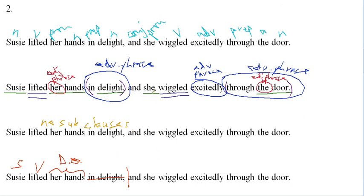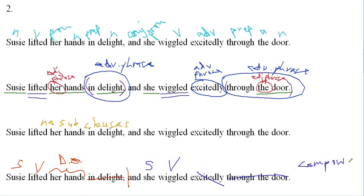Looking at the noun phrase, we have 'she,' so 'she' is a subject. 'Wiggled' — she wiggled, that's a complete thought. 'Excitedly' is an adverb, so we can get rid of that. 'Through the door' is a prepositional phrase, so we can get that out of our way. So we have subject 'she,' verb 'wiggled.' We have two main clauses. What type of sentence has two main clauses? Compound. So we'll write 'compound sentence' — and we've got it knocked out.